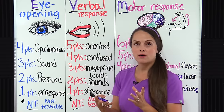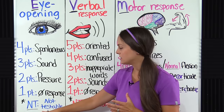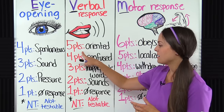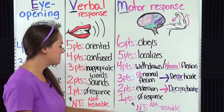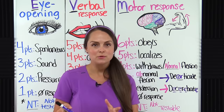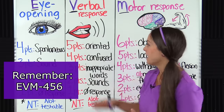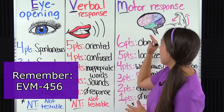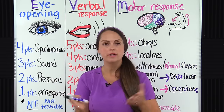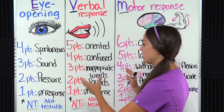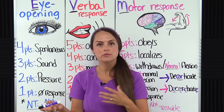For eye opening response, the max is four points with a minimum of one — it's never zero; if you can't test it, it's NT for not testable. Verbal response has a max of five, minimum of one, and NT if untestable. Motor has a max of six, minimum of one. Remember the order EVM — eye, verbal, motor — with maximums of four, five, six respectively. The total GCS is important, but the sub-scores from each response category are just as important, and whenever it's being reported, you usually also see those sub-scores. For example, a GCS of seven might be reported as E2, V2, M3.